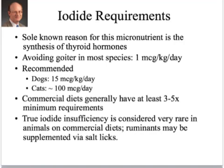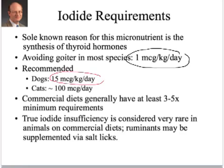Before going further with thyroid hormone synthesis, it's important to appreciate the nutritional and physiological role of the micronutrient iodine. The minimum iodine requirement of most animals is unknown, but the daily amount needed to prevent goiter — that's enlargement of the thyroid gland — is generally accepted to be about a microgram per kilogram per day. The amounts recommended for dogs and cats are in the order of 15 to 25 times that in commercial foods.